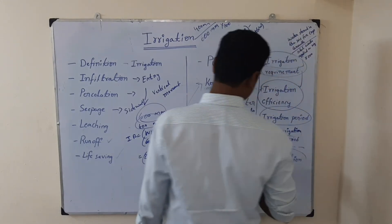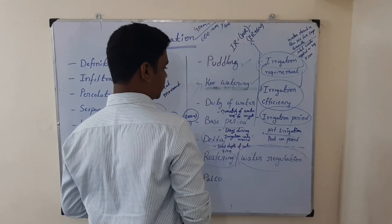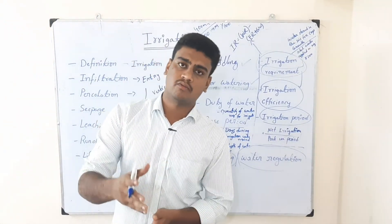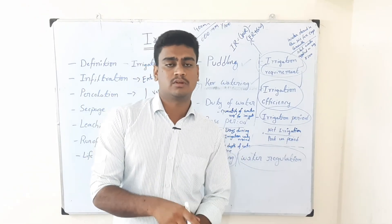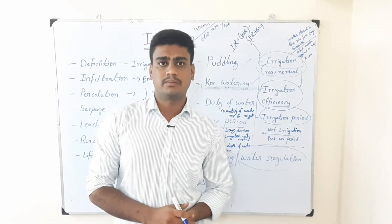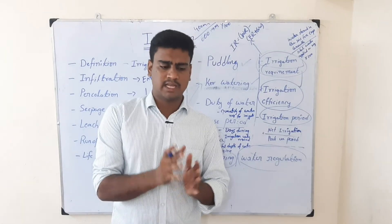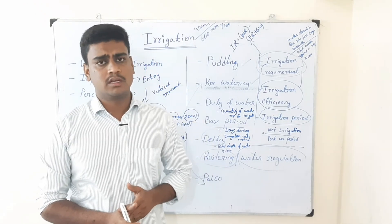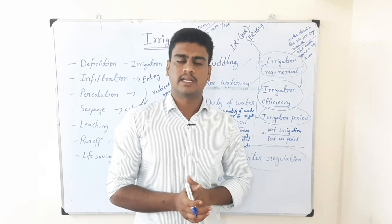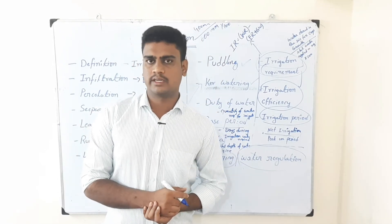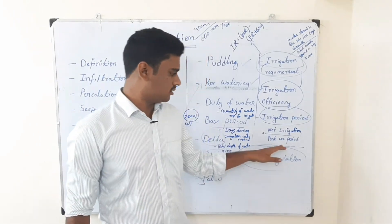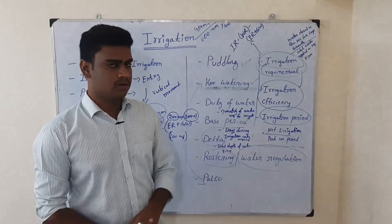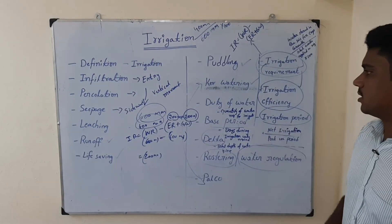The next term is irrigation period. Irrigation period equals net irrigation divided by peak use period. Note that gross irrigation is the total amount of water applied, whereas net irrigation is the amount ultimately utilized by the plant and for other purposes. Peak use period is the stage at which the crop uses water at its maximum — the critical stage for irrigation. Every crop has its own critical stage, which is the peak use period. So irrigation period equals net irrigation divided by peak use period, and the answer is expressed in days.